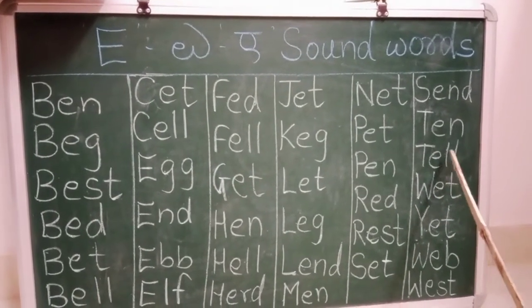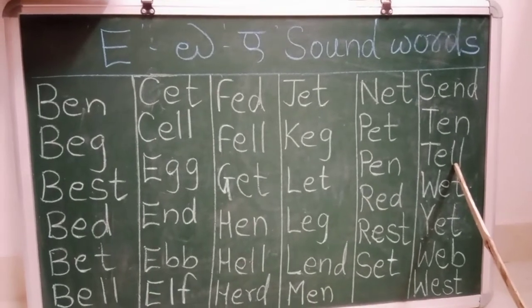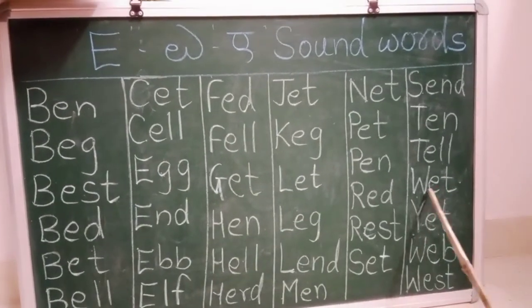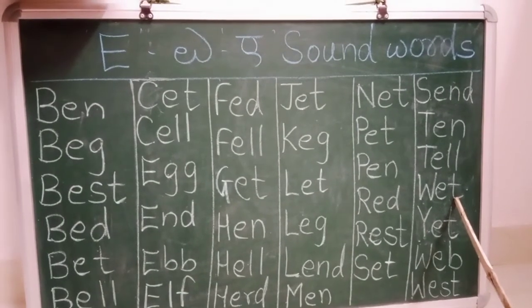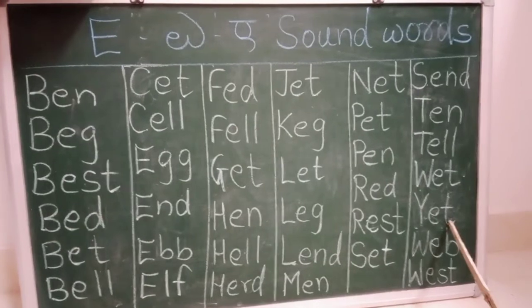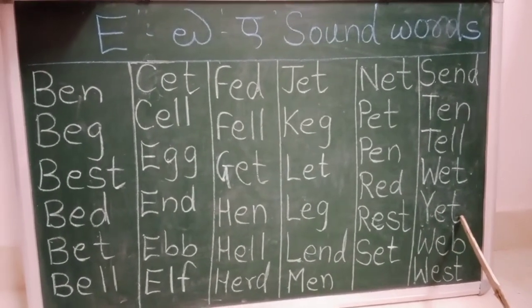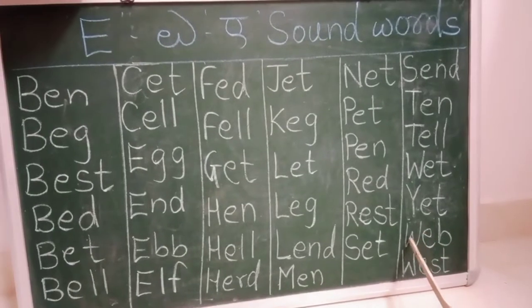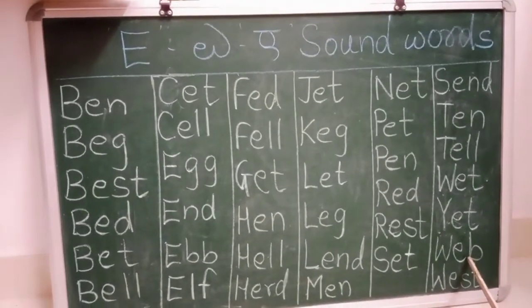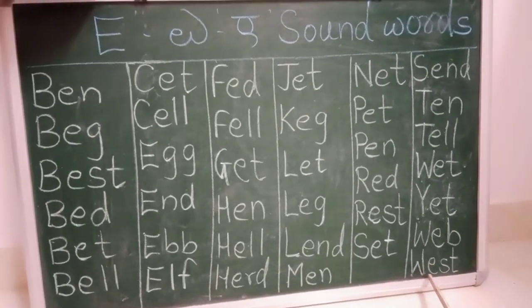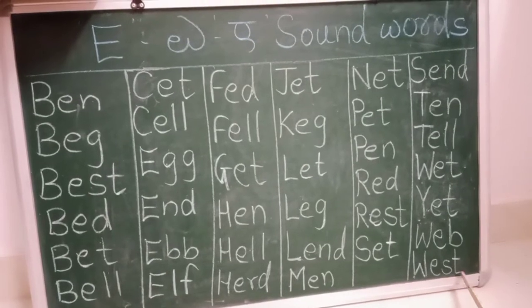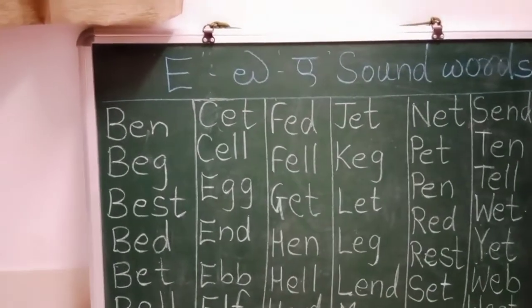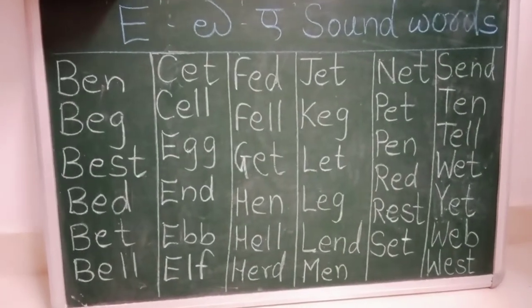T-A-L, T-A-L, Tell. T-E-L-L, Tell. W-A-T, W-E-T, Wet. Y-A-T, Y-A-T, Yet. Y-E-T, Yet. W-A-B, W-A-B, Web. W-E-B, Web. W-E-S-T, W-E-S-T, West. Ok children, now practice all these words. Thank you.